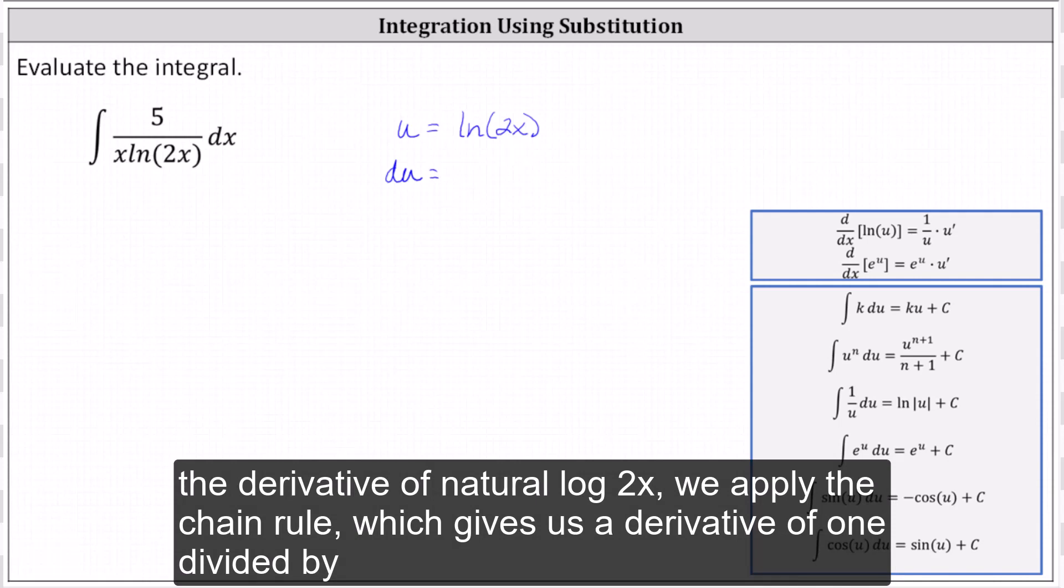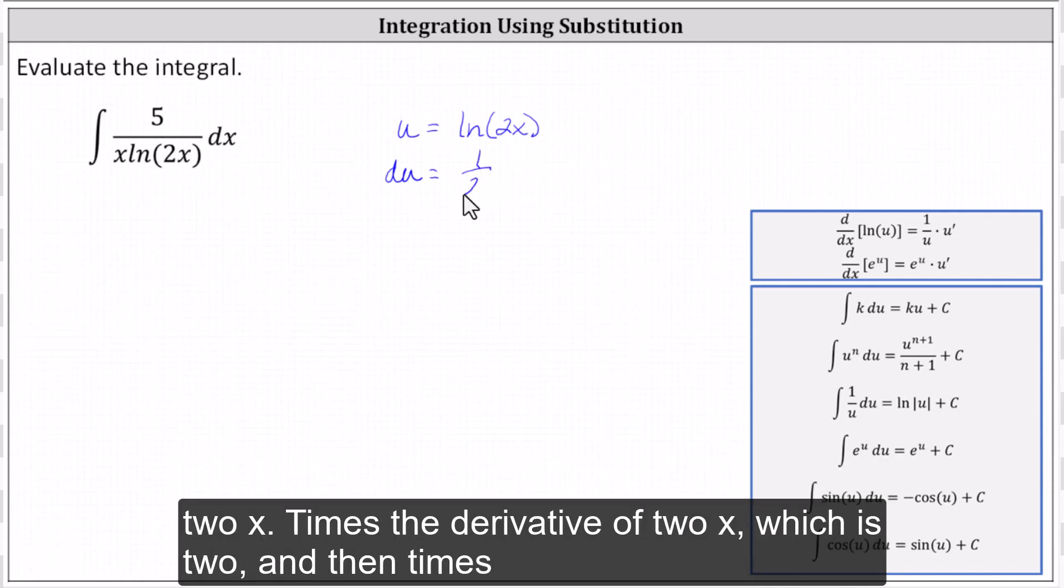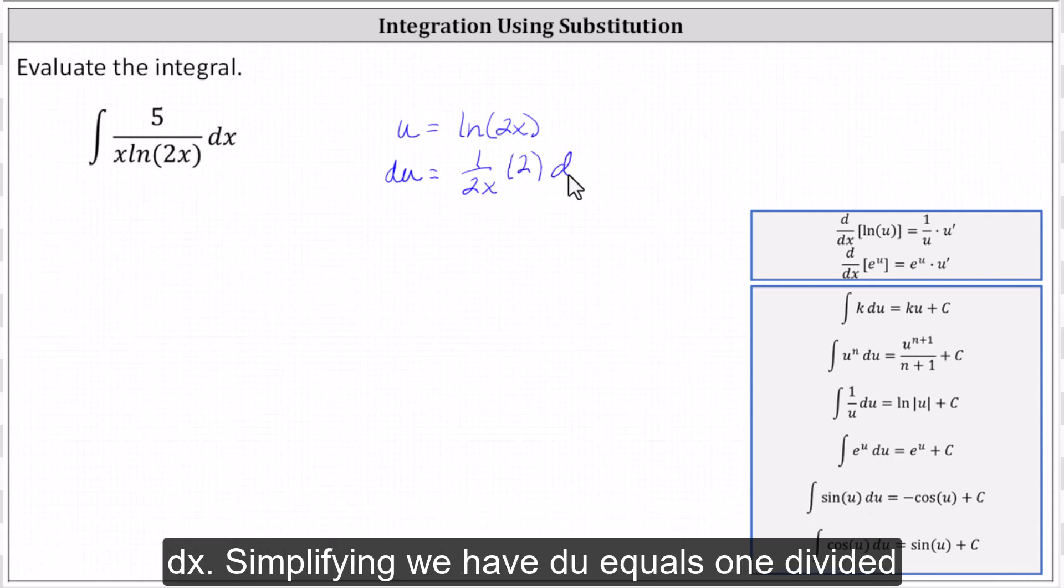which gives us a derivative of one divided by 2x times the derivative of 2x, which is two, and then times dx. Simplifying, we have du equals one divided by x dx.